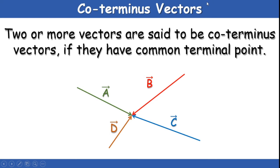Co-terminous vectors: vectors which have a common terminal point — or common head — are called co-terminous vectors. If two or more vectors share the same terminal point, they are co-terminous. In the example, vectors A, B, C, and D all have the same terminal point; hence we call these co-terminous vectors.